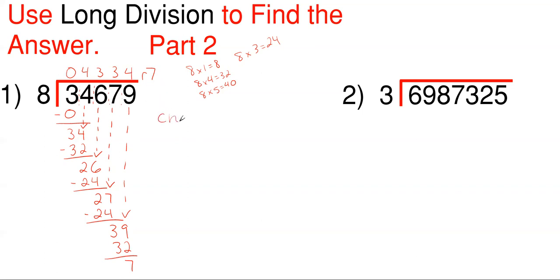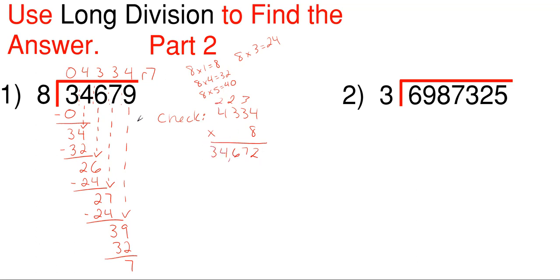Now there's always a way to check your answers. The way you check it is to take your answer, excluding the remainder portion for now, and multiply it by your dividing number of 8. So 8 times 4 gives me 32. Add the 3 up here — 8 times 3 gives me 24, and adding in 3 gives me 27. Same thing again: 24 adding in 2 gives me 26. And then adding in 2 over here — 8 times 4 is 32, plus 2, which is 34. Whenever you have a remainder, you add it in at the end after you multiply through. So 34,672 plus 7 gives me 34,679, and that is what my number was. So my math checks out.